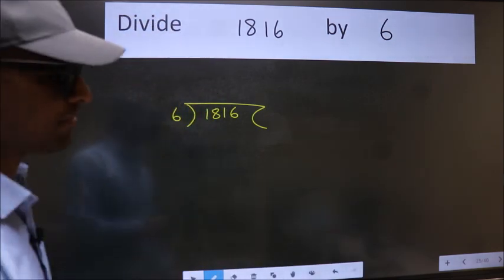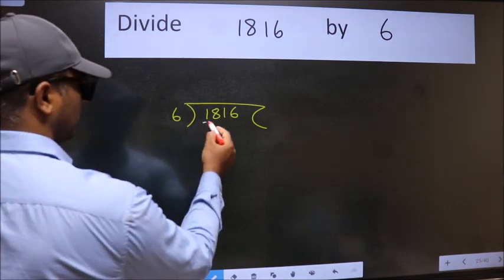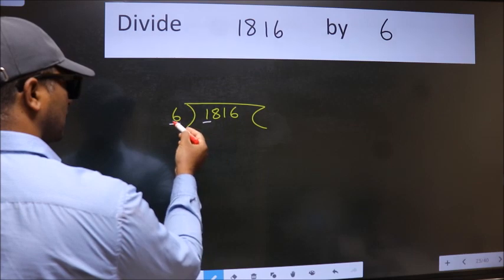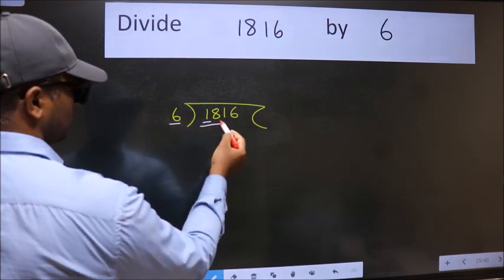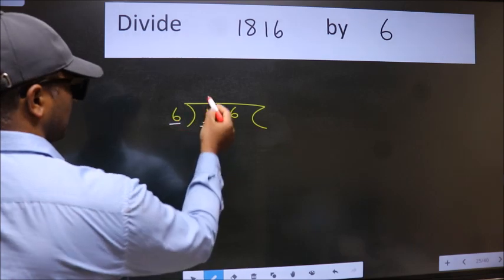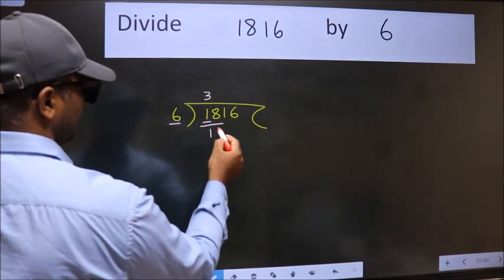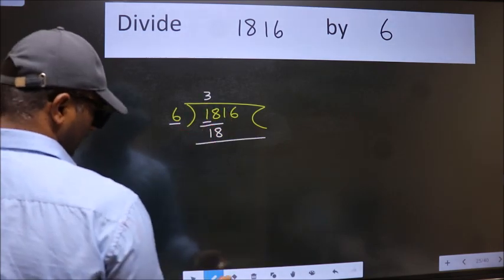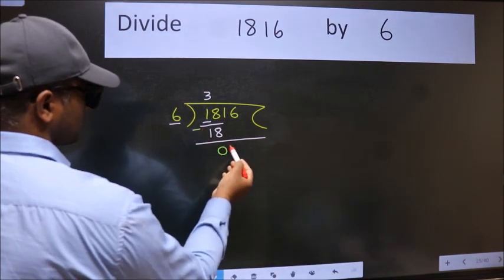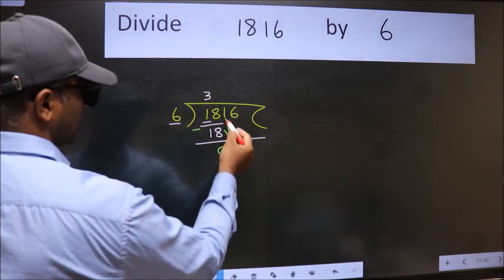Next. Here we have 1 and here 6. 1 is smaller than 6. So we should take two numbers, 18. When do we get 18 in 6 table? 6 threes 18. Now we should subtract. We get 0. After this bring down the beside number.